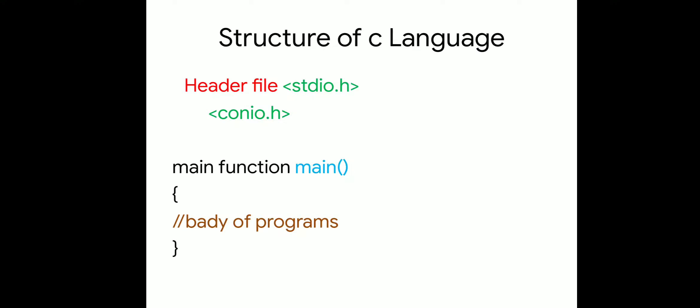C is a structured programming language, so let's look at the structure of C. First, we use header files. The most common is stdio.h, which stands for Standard Input and Output. We use stdio.h because it contains the predefined functions printf and scanf — printf is the output function and scanf is the input function.